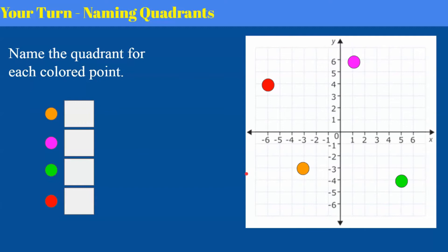Your turn. I would like you to name the quadrant for each of these colored points. Fill in on your paper, pause the video, come back and hit play when you're ready to check your work.